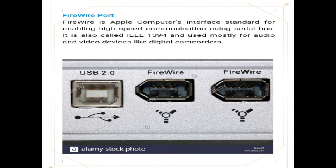Next is the FireWire port. FireWire is Apple Computer's interface standard for enabling high-speed communication using Serial Bus. It is also called IEEE 1394 and is used mostly for audio and video devices like digital camcorders. There are FireWire 400s and FireWire 800s. FireWire port works like a multi-platform Serial Bus and can reach up to 400 megabits per second. The data transfer is relatively fast and results in excellent quality. It is very similar to the USB 2.0 port and offers an enhanced data transfer rate between devices.